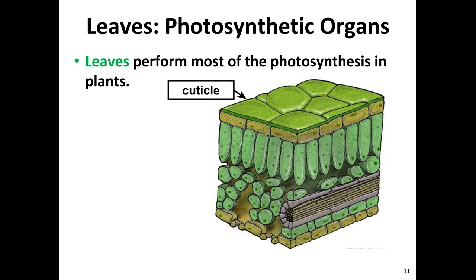If water were to come in contact with the cuticle of a leaf, it would not be absorbed through that layer but instead would roll off, just like water would roll off a waxy surface. In terms of evolutionary adaptations, this cuticle allows plants living in dry environments to block the escape of water by osmosis, helping the plant maintain homeostasis. The thicker the cuticle, typically the drier the environment.